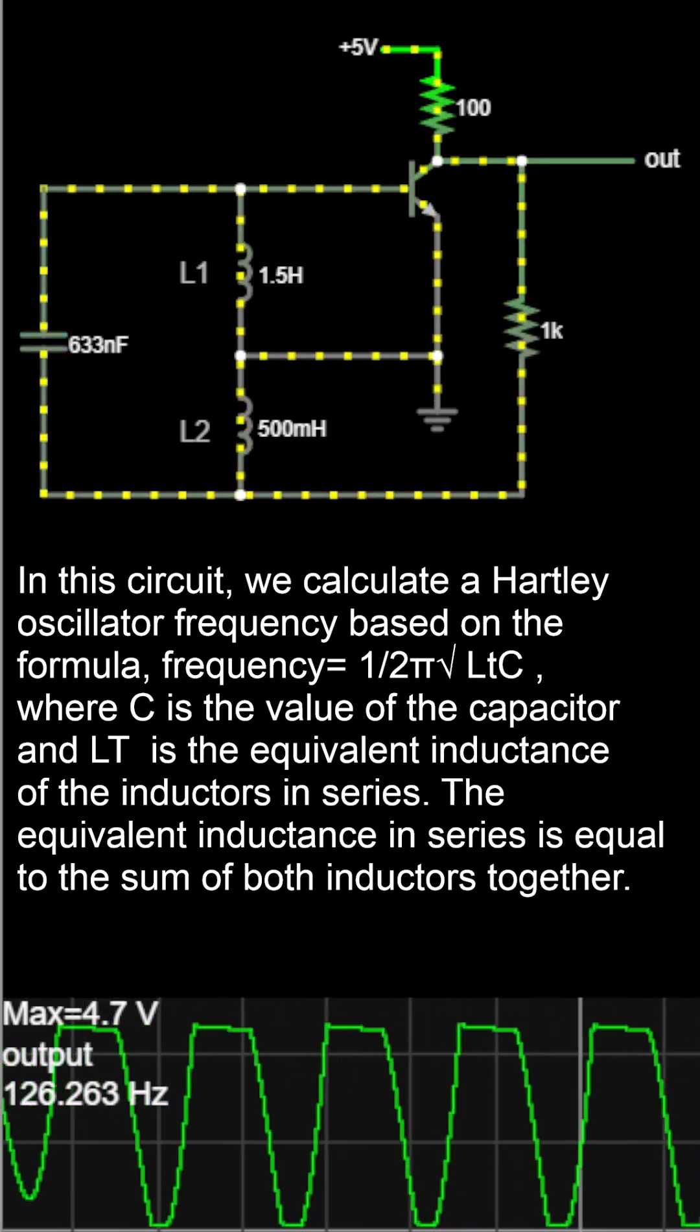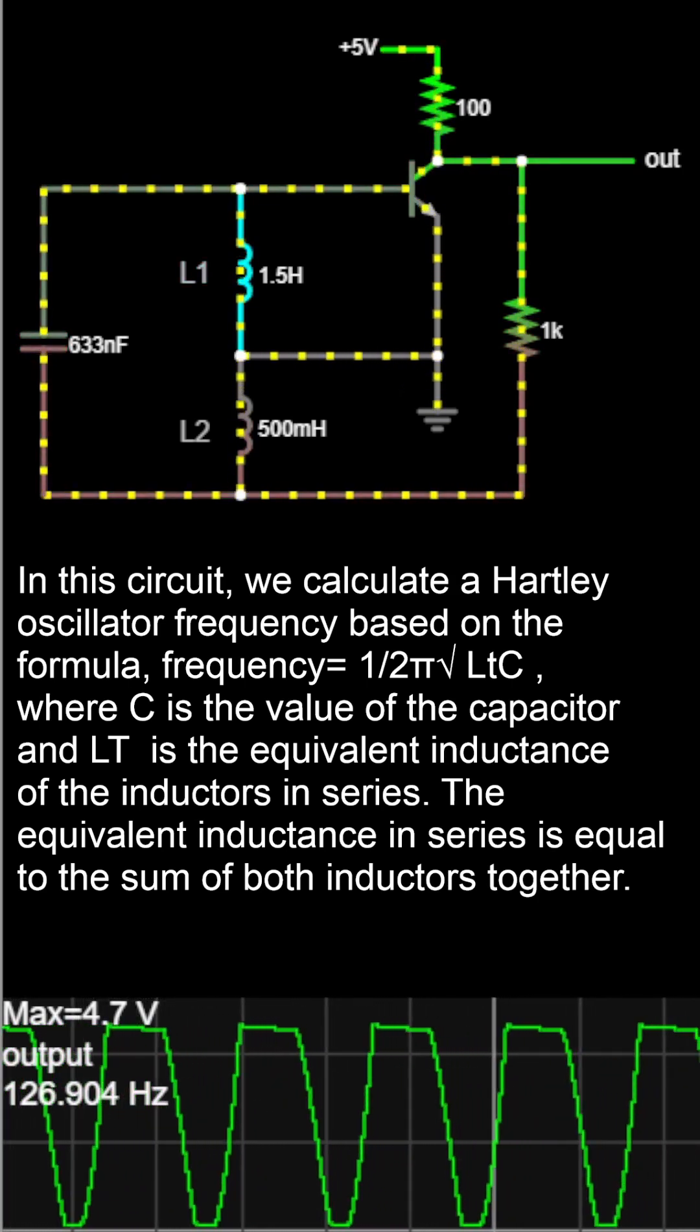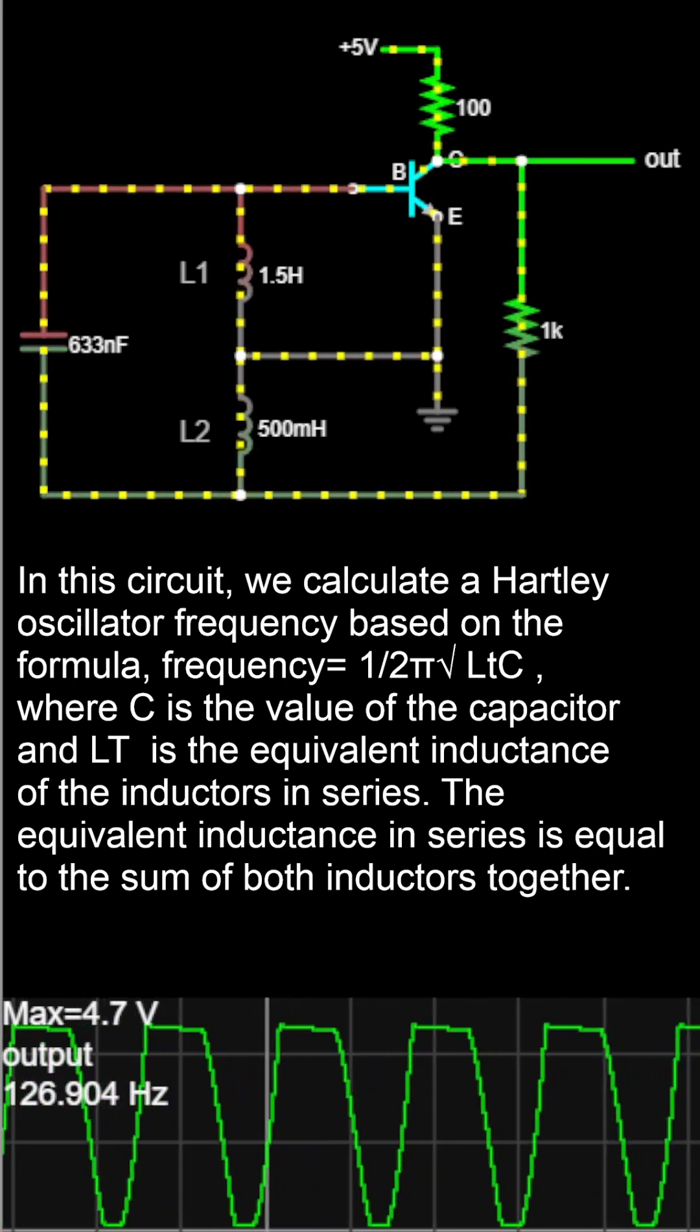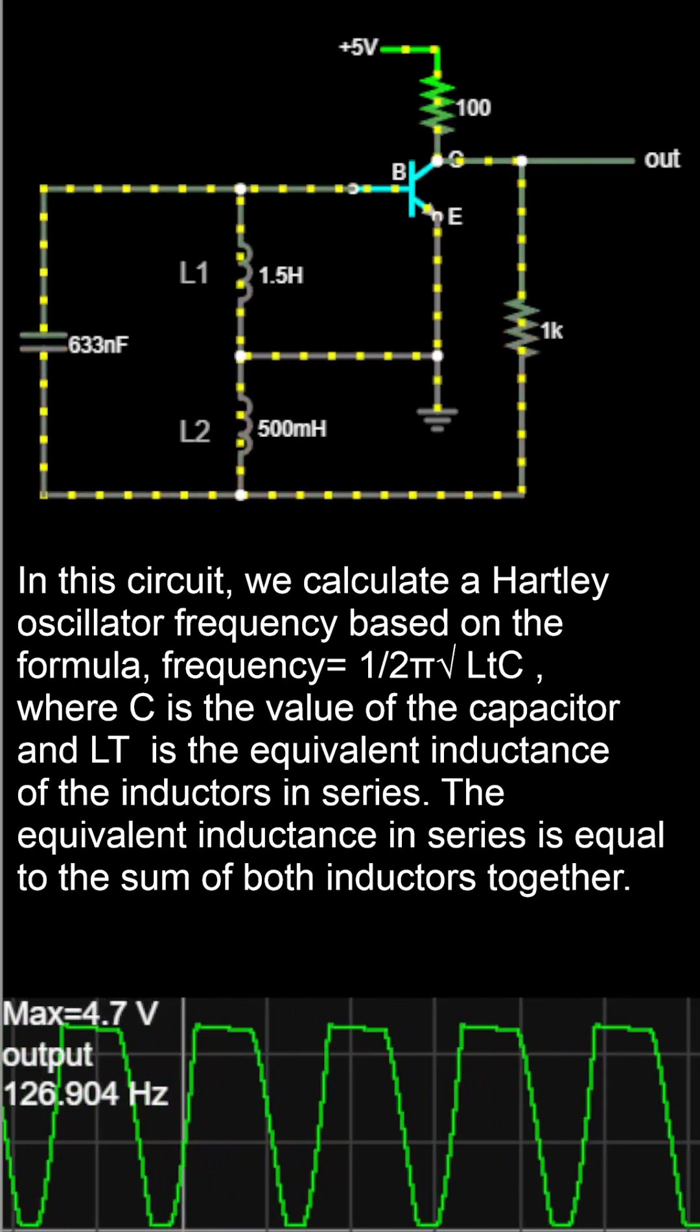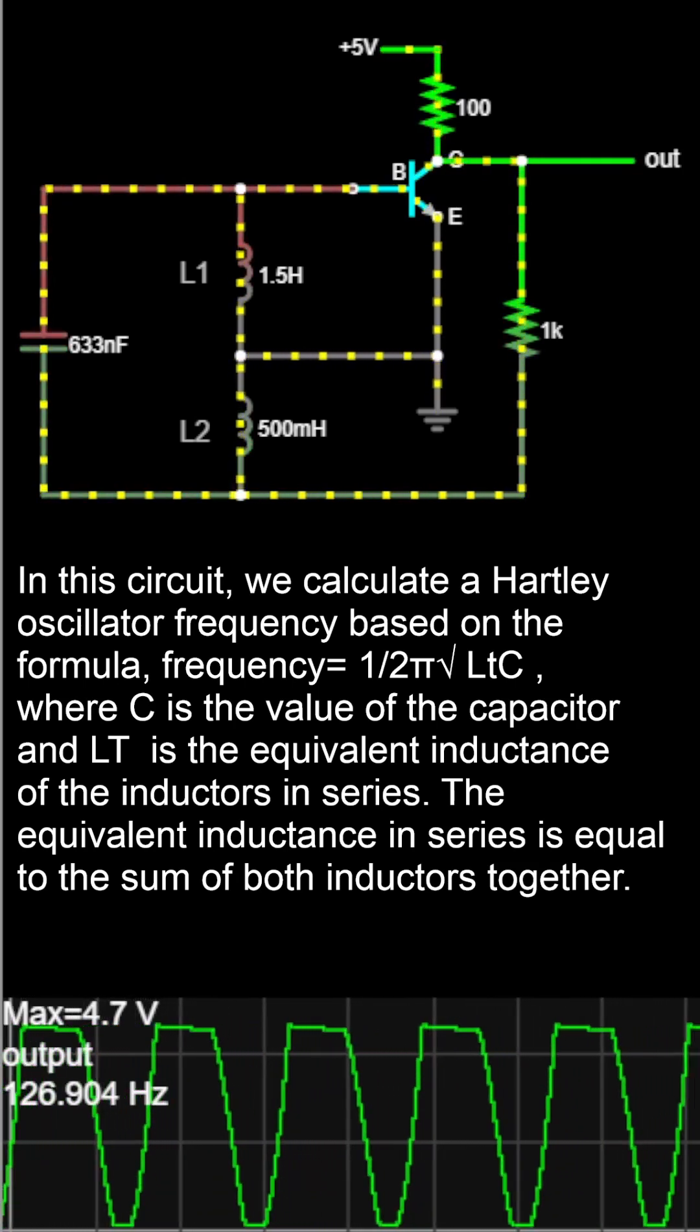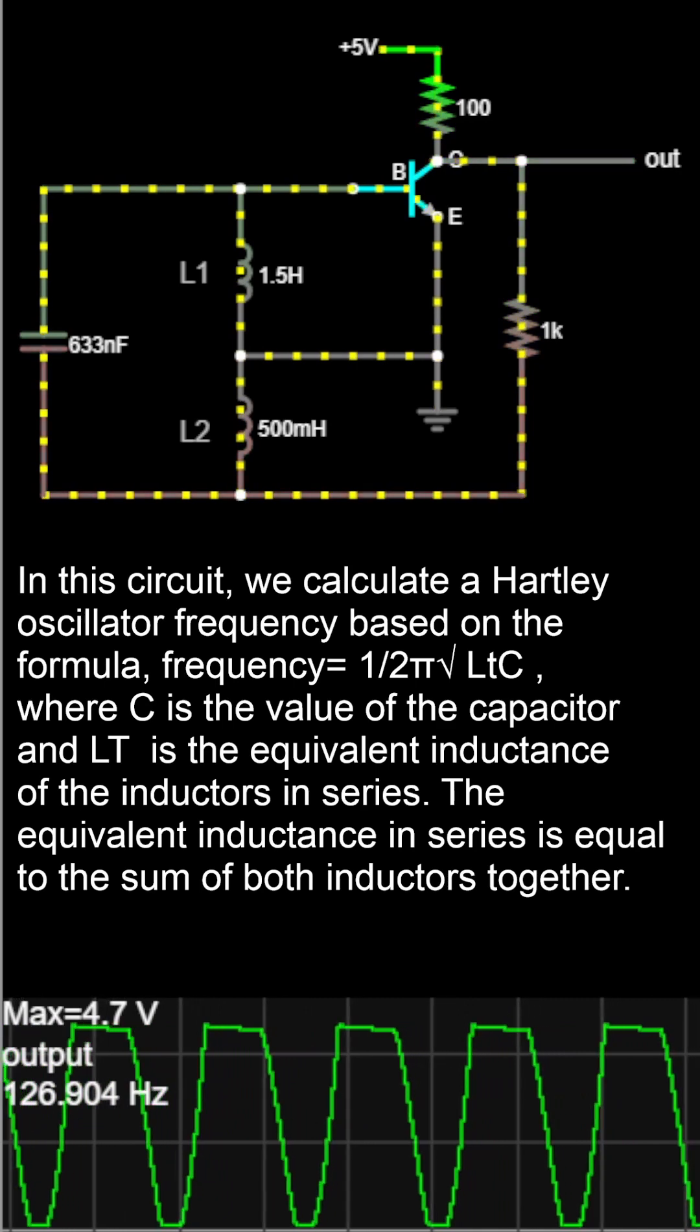This brings the transistor base voltage up to where the transistor can conduct, bringing the output low. Once the base voltage is high, the current through inductor 1 and inductor 2 begins to reverse, draining the capacitor and bringing the base voltage down again. This turns off the transistor and brings the output high again.